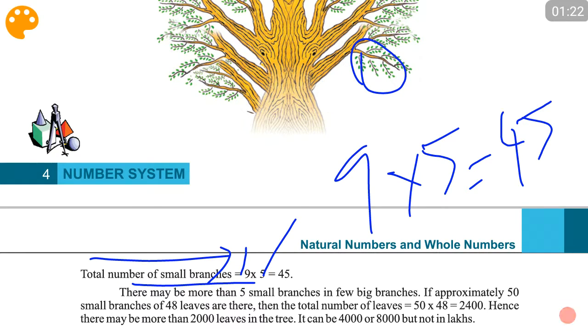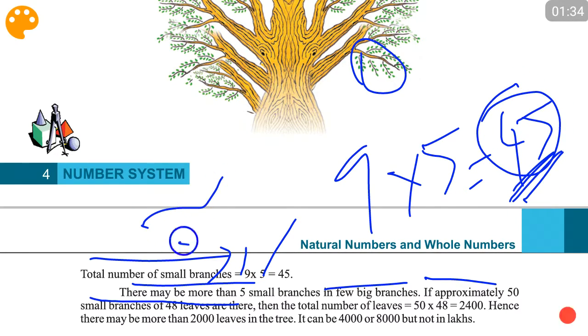There may be more than five small branches in a few big branches. If approximately 50 small branches of 48 leaves are there, we can approximate this 45 to approximately 50 because in some big trees we will have more than five small branches.